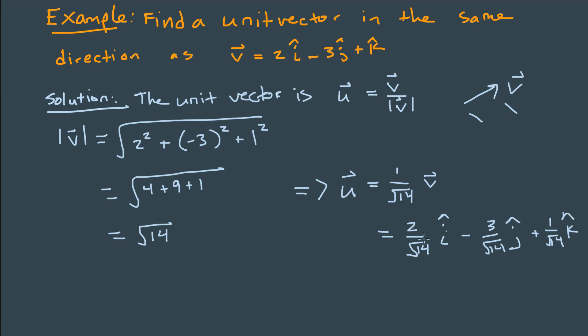Now this vector is a vector that has unit magnitude. We can go ahead and check, we can say, okay, take this component squared plus this component squared plus this component squared, take the square root, we'll see that we do indeed get a unit vector in the direction of v.